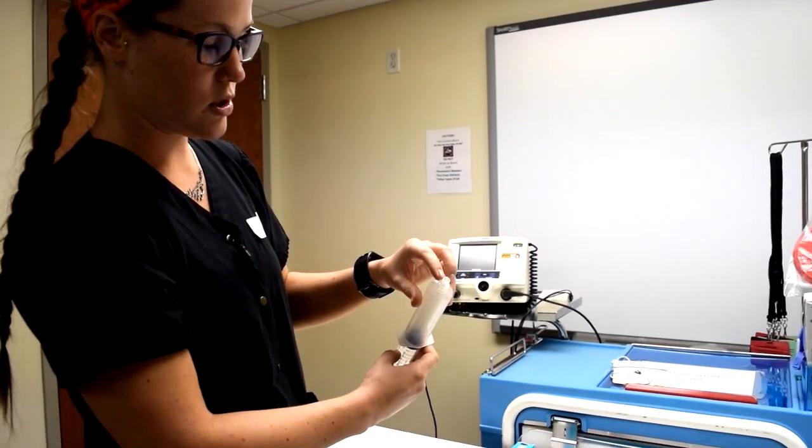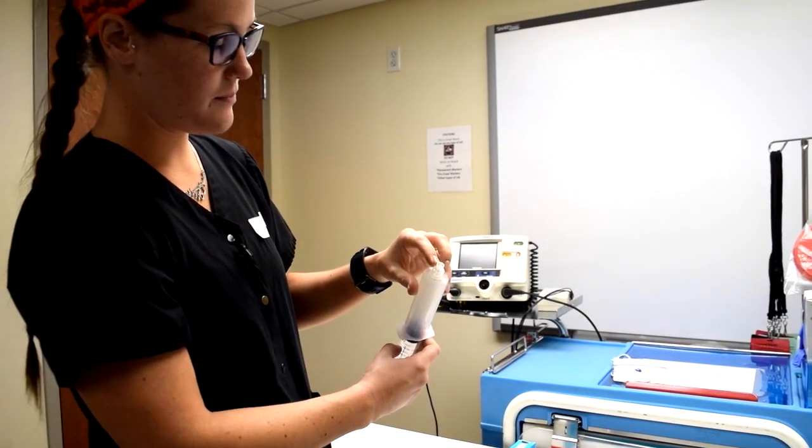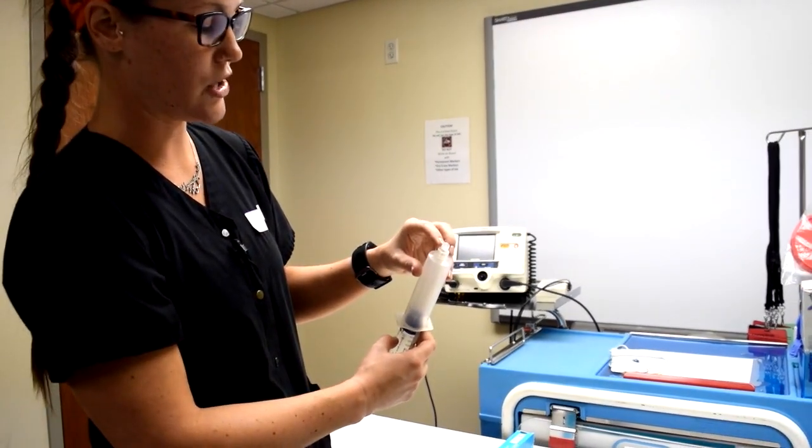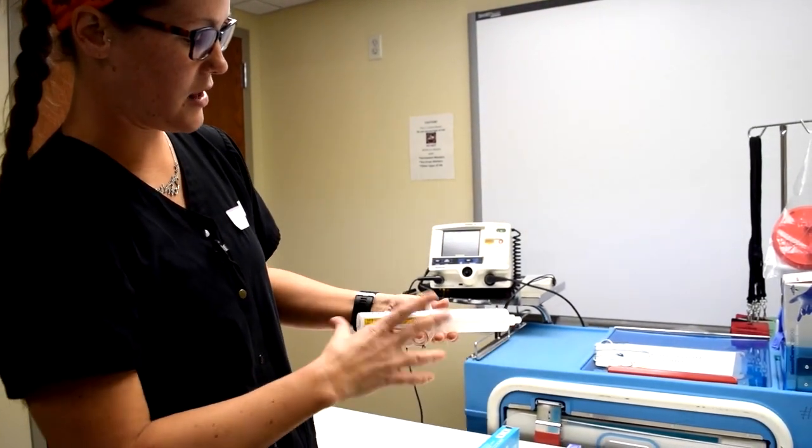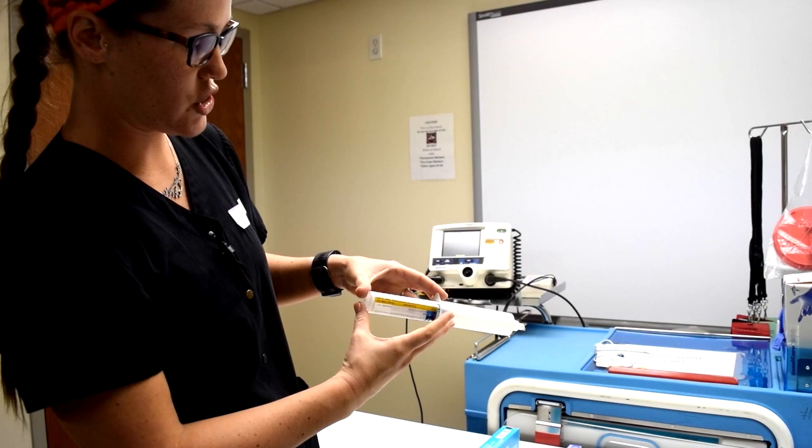Now at the top here, you'll see your luer lock or your needleless connector right there. So whenever you get ready to administer this medication, you'll go ahead and twist it on, make sure that you're on securely, and then you'll use these wings and inject the medication.